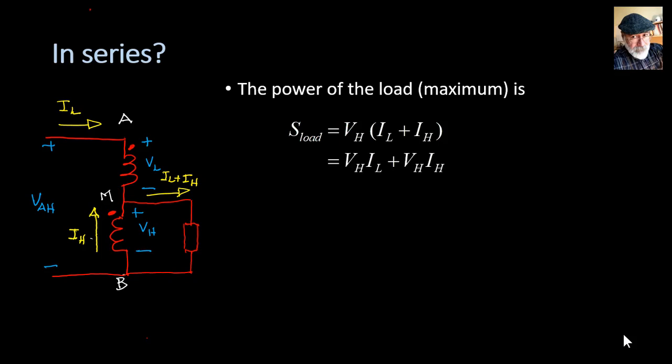We can expand it like so. And remember that VH in reality is A times VL, like so. A is the ratio of the single phase transformer, but VLIL is the rated power of the low side. VHIH is the rated power of the high side, but because this is a transformer with only two windings, the rated power of the low side is equal to the rated power of the high side. It's the rated power of the whole transformer.